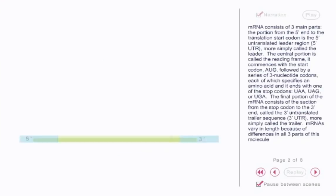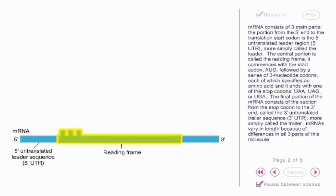mRNA consists of three main parts. The portion from the 5' end to the translation start codon is the 5' untranslated leader region, more simply called the leader. The central portion is called the reading frame. It commences with the start codon, AUG,